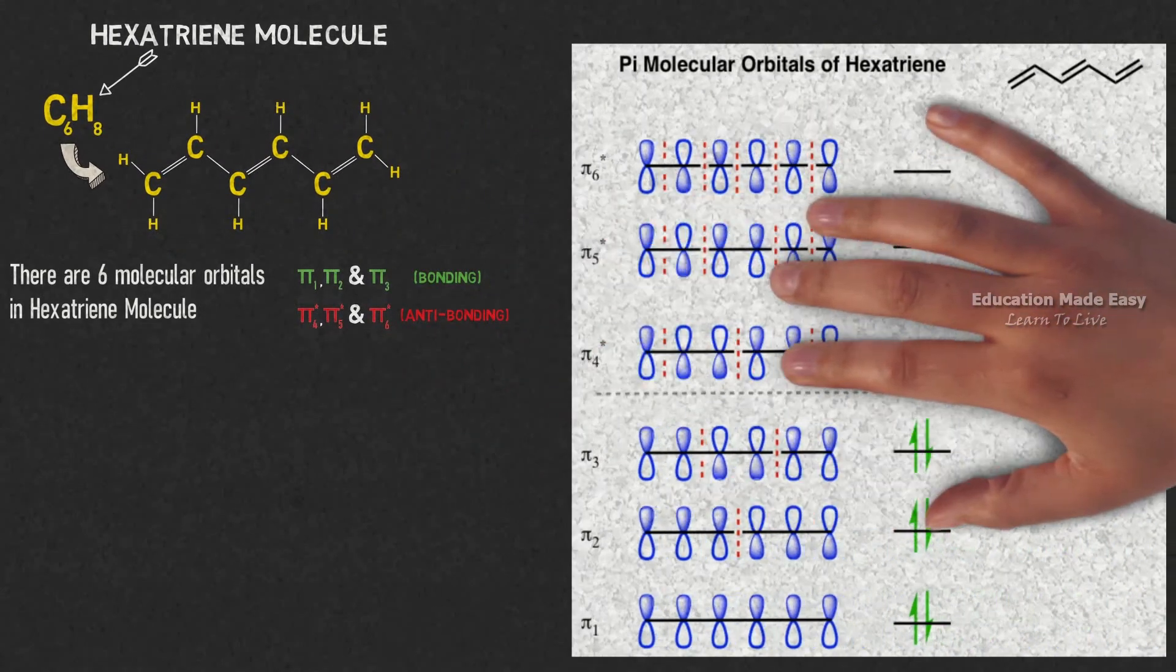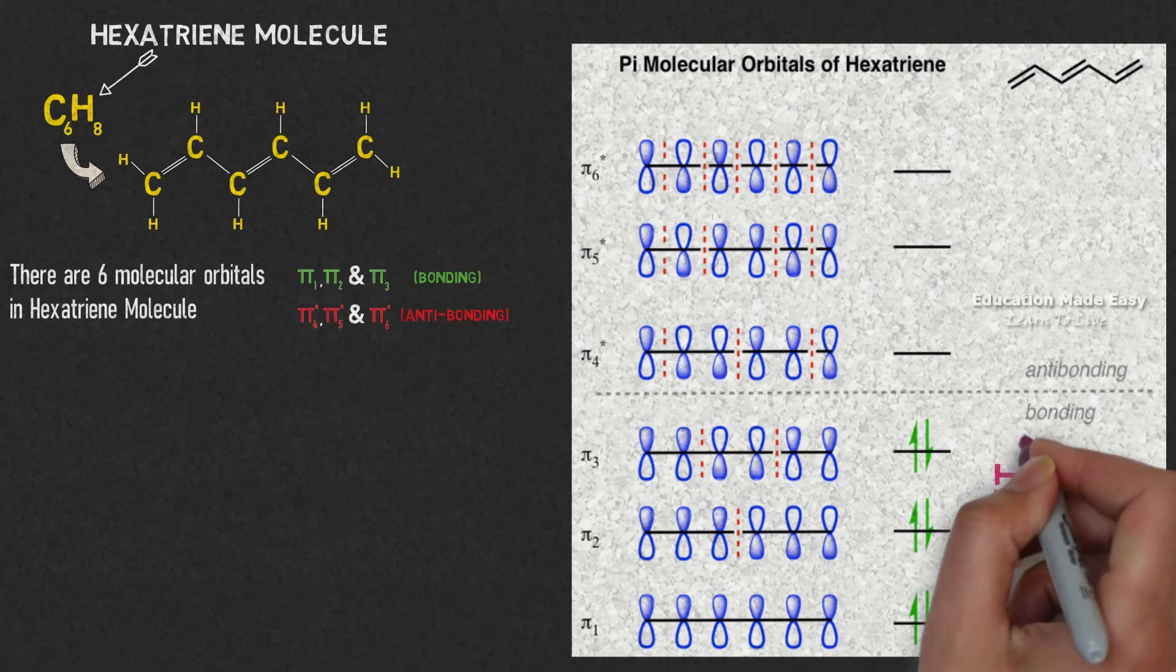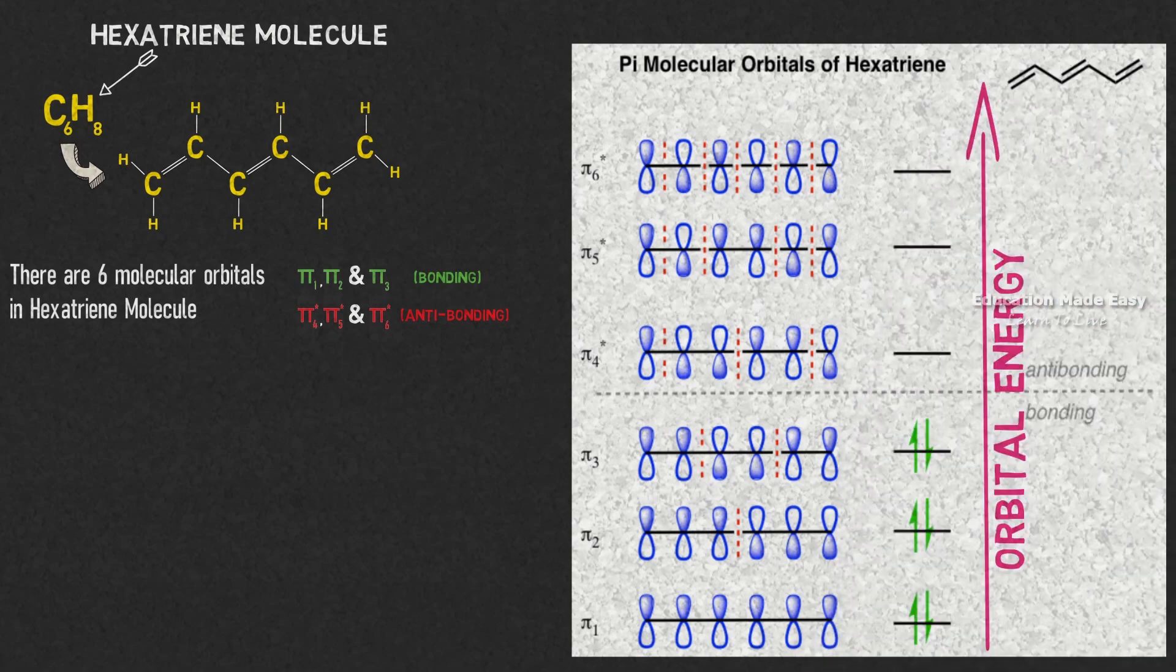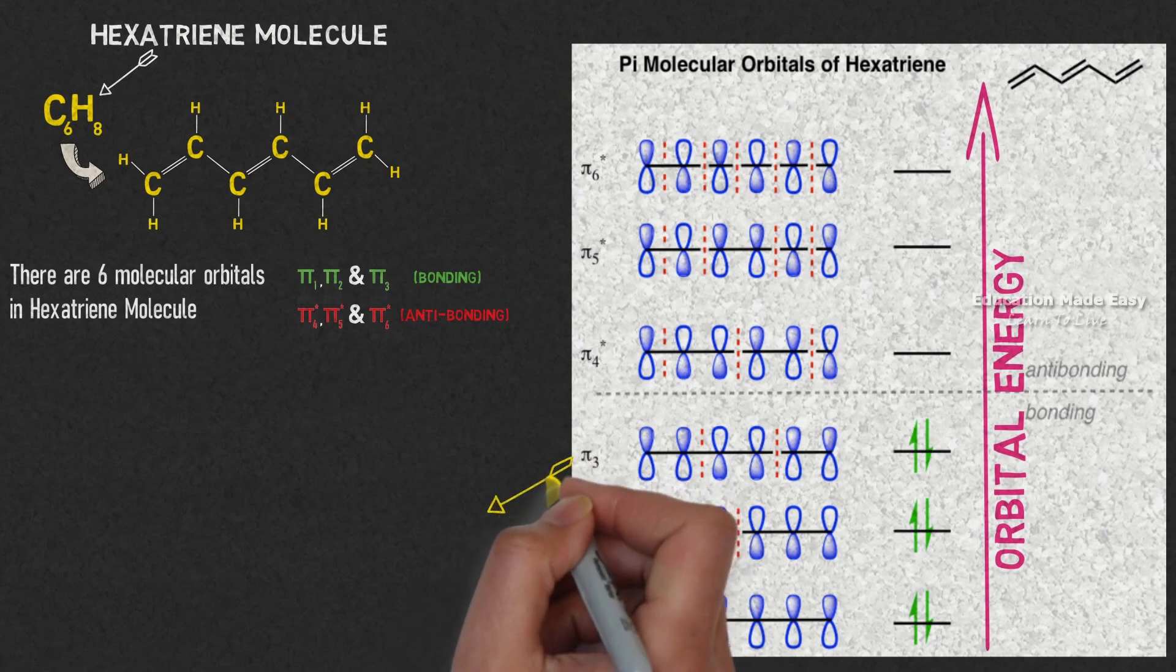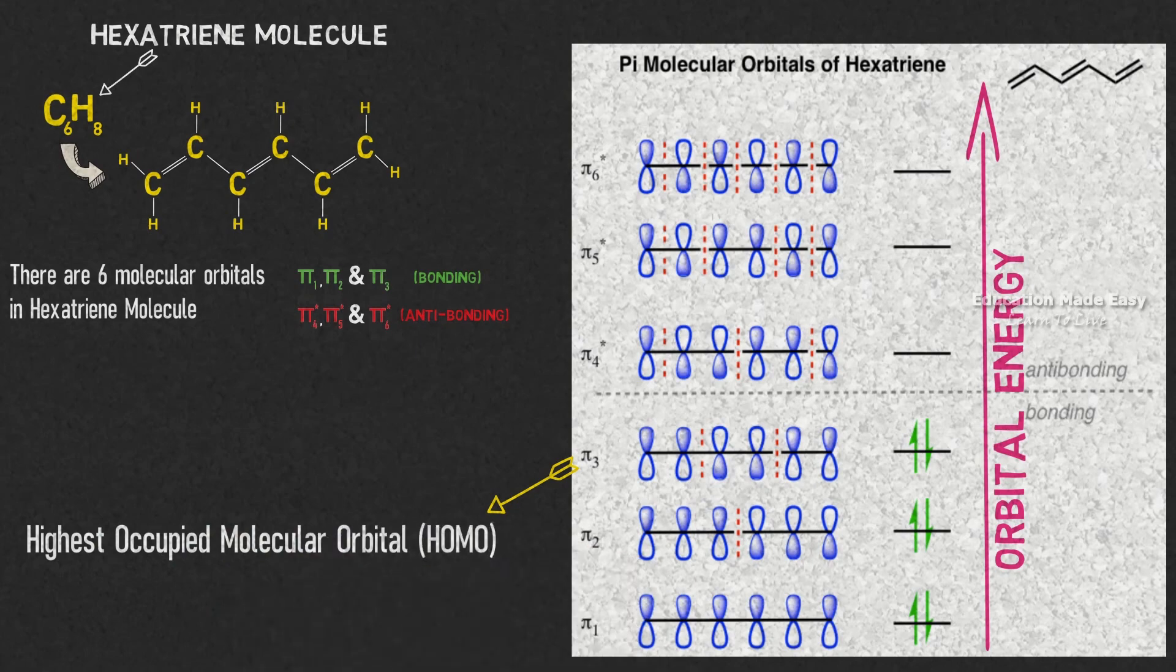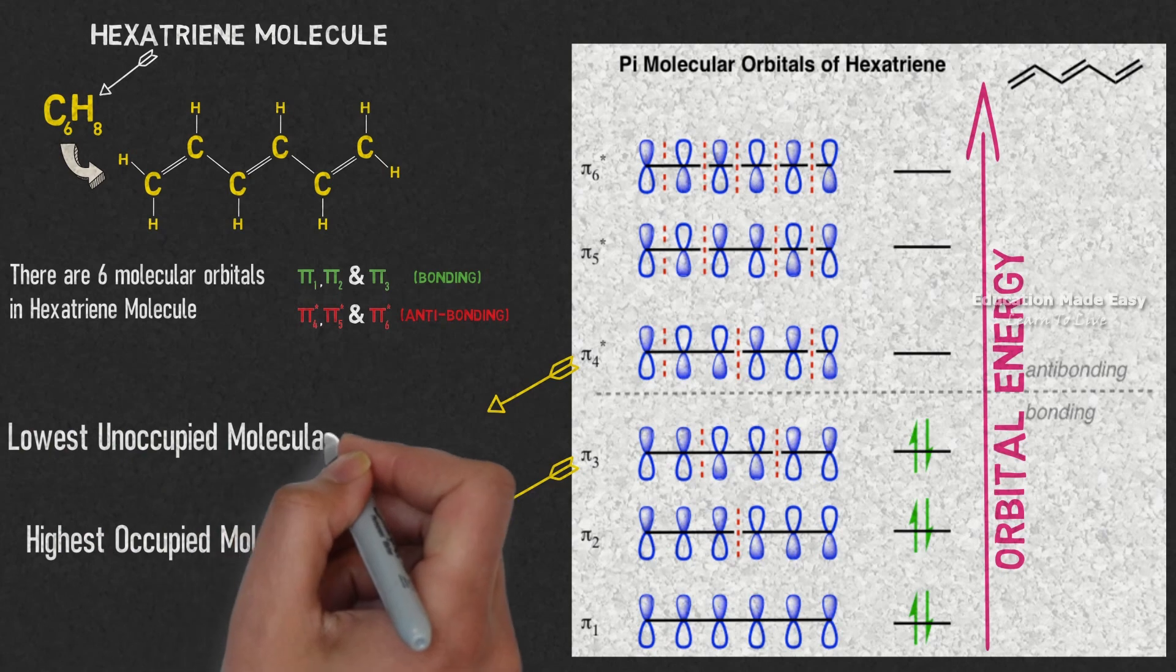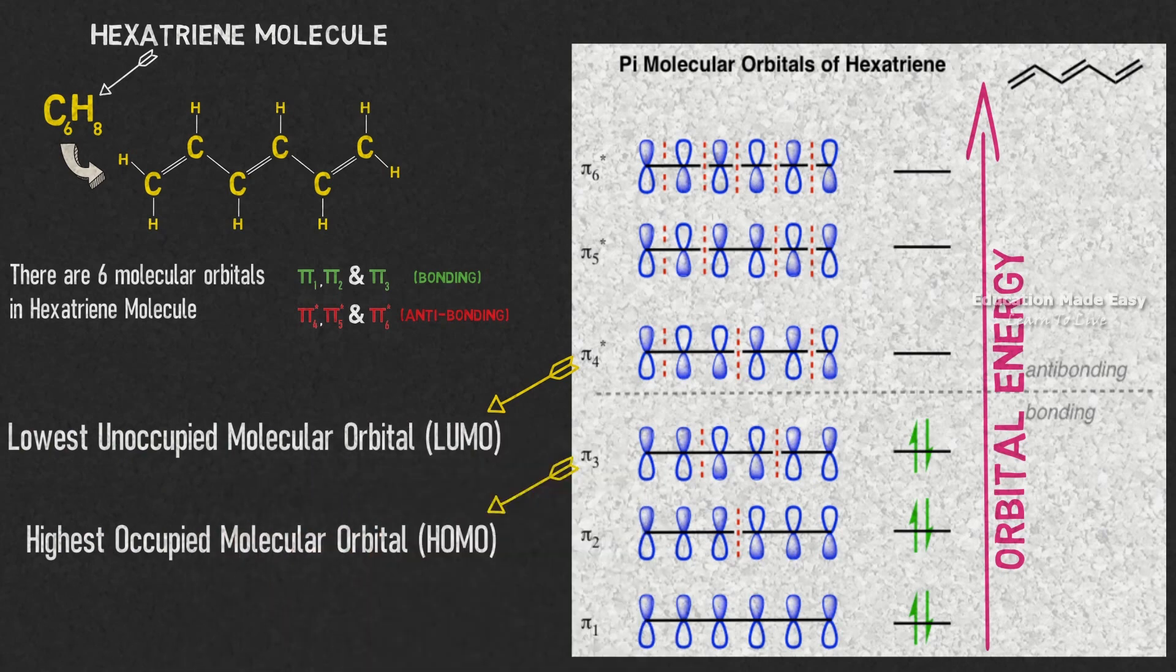The molecular energy diagram of hexatriene is shown. The orbital energy of the molecular orbitals increases in the upward direction. From the picture, we can understand that Pi3 is the highest occupied molecular orbital or HOMO and Pi4 star is the lowest unoccupied molecular orbital or LUMO.